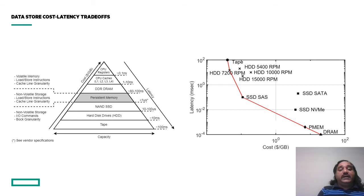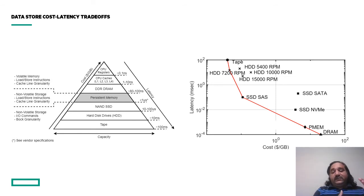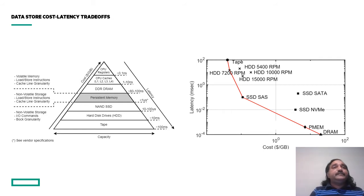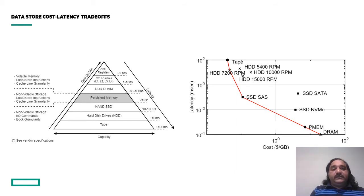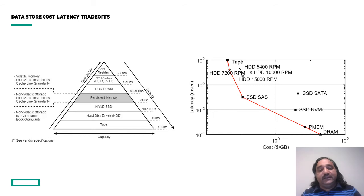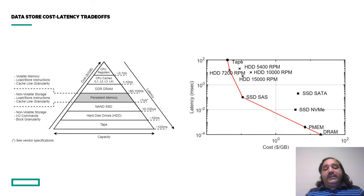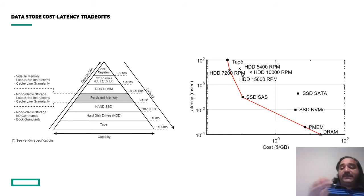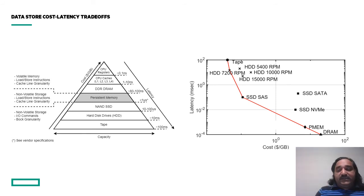Let's look at cost and latency trade-offs across storage technologies. There are different storage options from tape all the way to DRAM — like the Google use case we just discussed — with varying costs and latencies. Non-volatile memory and persistent memory represent interesting points on the cost-latency curve, and are worth examining for these trade-offs.